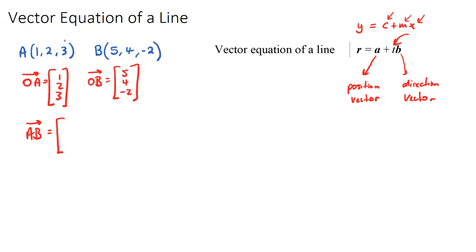Or it's just as simple as thinking how do we get from 1 to 5? Well, we go positive 4 units. How do we go from 2 to 4? Positive 2. How do we go from 3 to negative 2? We'd go down 5. So that is going to be the journey from A to B.